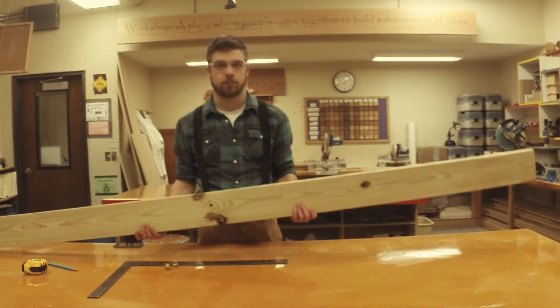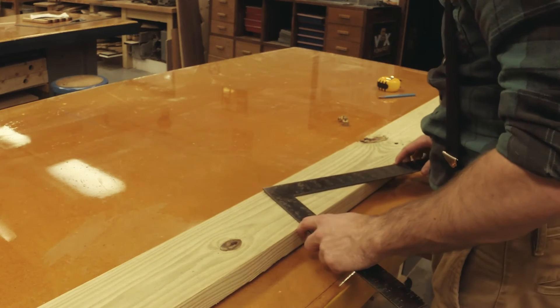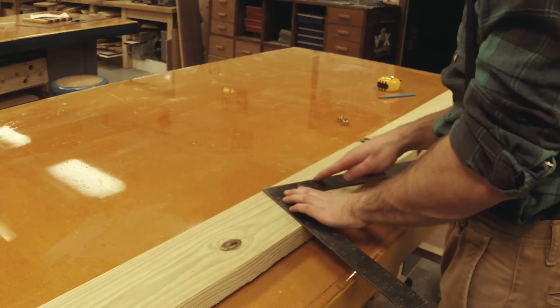For my rafter, I'm using a 2 by 6 by 10 foot board. To begin layout, I need to set up my framing square with stair gauges. I line up my square according to my roof pitch with the rise on the tongue and the run on the blade.